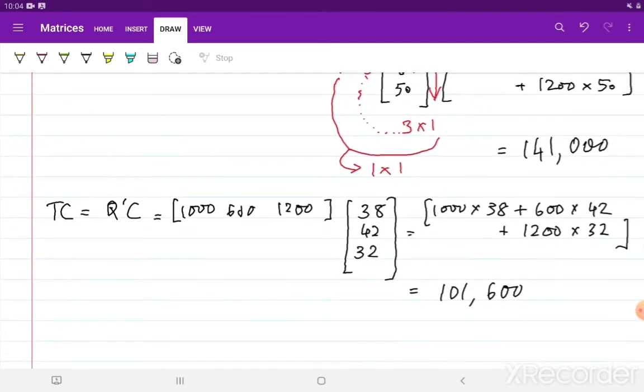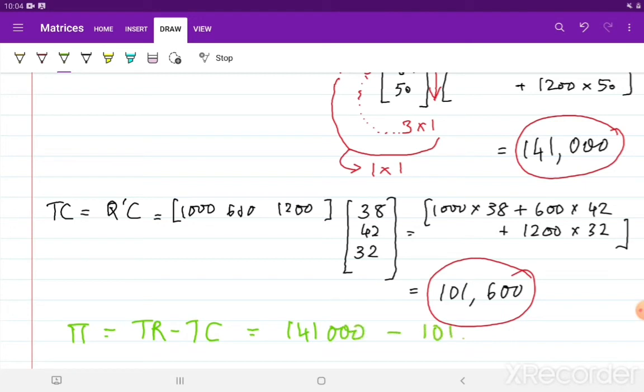So as you can see, this is my TR value, this is my TC value, and my profit, oh I selected the blue pen by mistake. But anyways, the profit is TR minus TC, which is 141,000 minus 101,600, which is equal to 421,600.